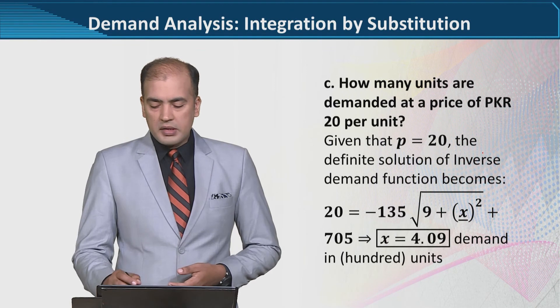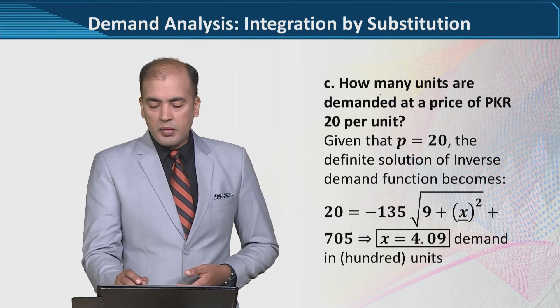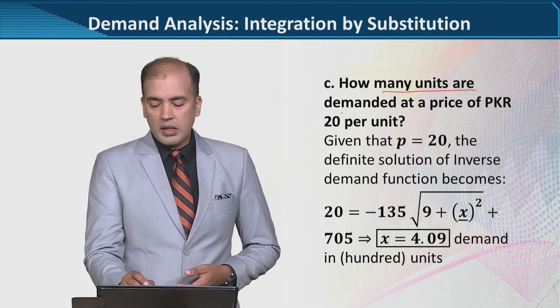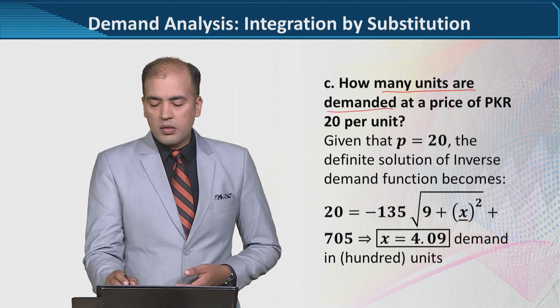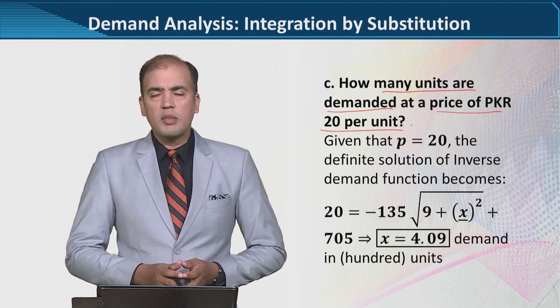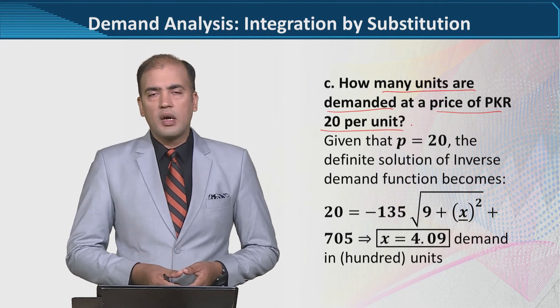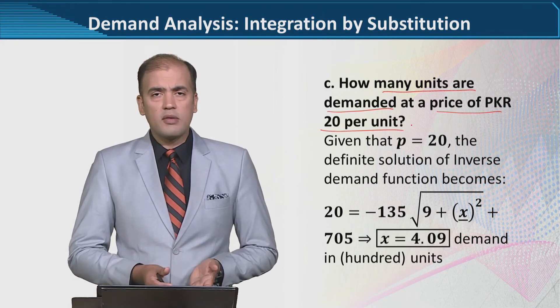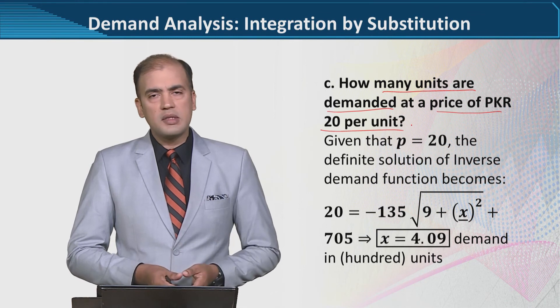The further parts include this: we were asked to find out the number of units that are demanded if the price is 20. So that is very easy because we now have the inverse demand function. If the value of one variable is given, we can easily find the value of the other.